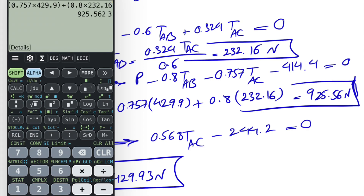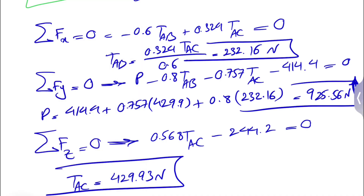Evaluating: 414.4 plus 0.757 times 429.9 plus 0.8 times 232.16 gives P equals 925.56 Newtons, acting upward. That's the final answer. Hope everything was clear — let me know if you have any questions, take care and see you in the next video!